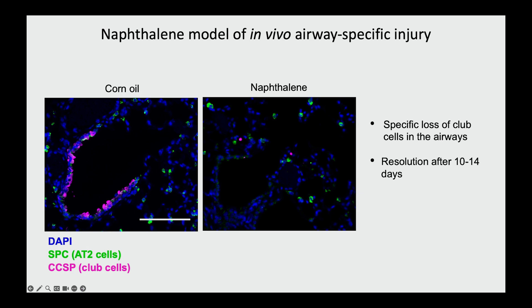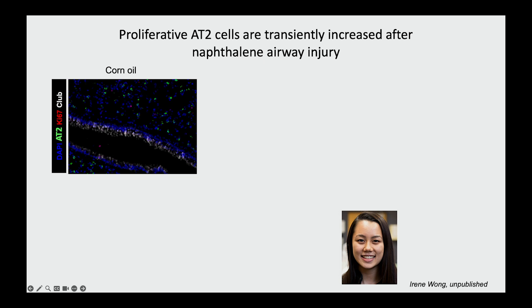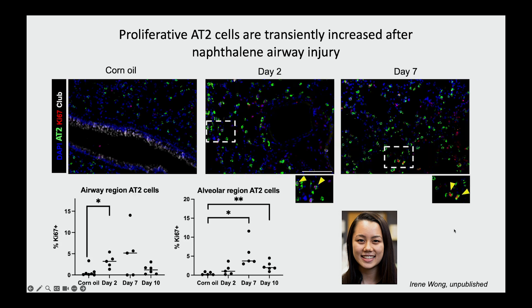What Irene Wong, a really amazing graduate student in the lab, decided to do was to use both single-cell RNA-seq and also in vivo studies. What she learned was that in response to this airway-specific injury, the alveolar type 2 cells — the progenitor in the alveolar space — are actually undergoing transient proliferation. This is quite surprising because in a control mouse lung, these cell types are typically quiescent. There are no Ki67-positive cells. However, after this naphthalene damage, in a very short time course, they undergo a proliferative wave, which is then quieted down by the time the airway injury is resolved.